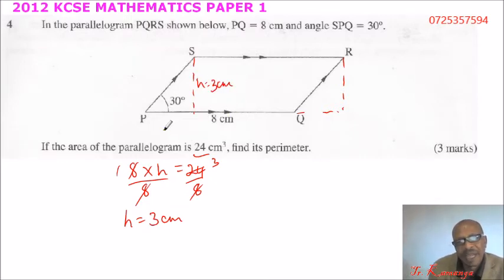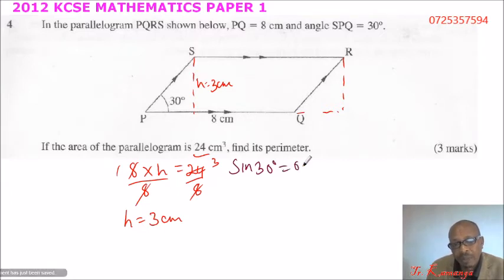Now that we have the height, how do we use this value, that is the height, to get PS? We can use the trig ratio, sine 30 is equal to opposite over hypotenuse.